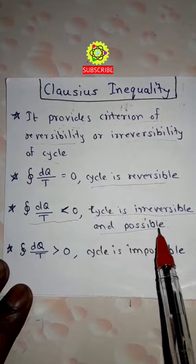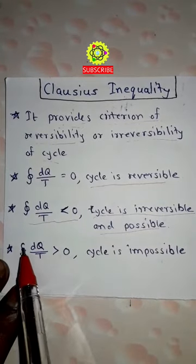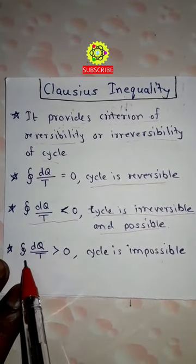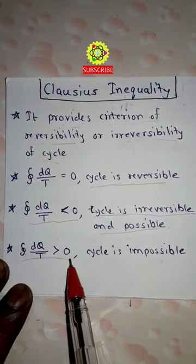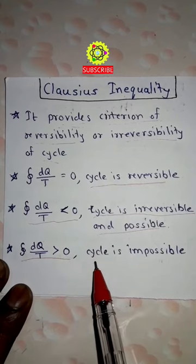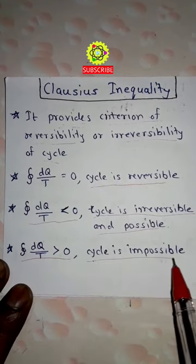The irreversible cycle is possible. And when the cyclic integration of dQ upon T is greater than zero, the cycle is impossible.